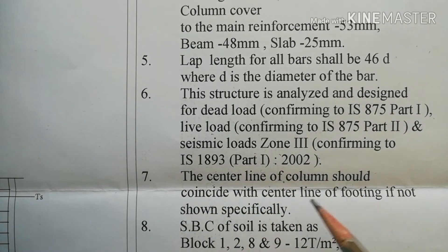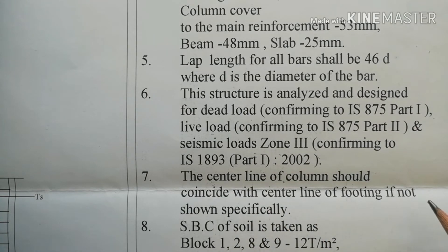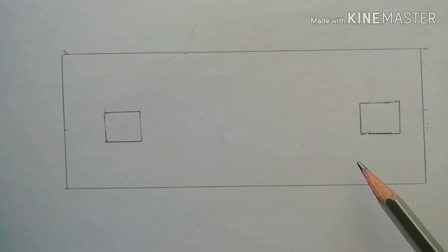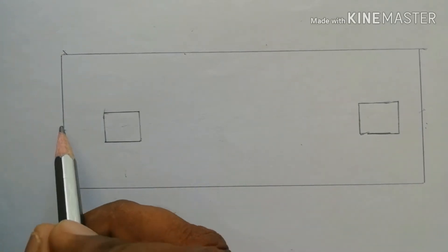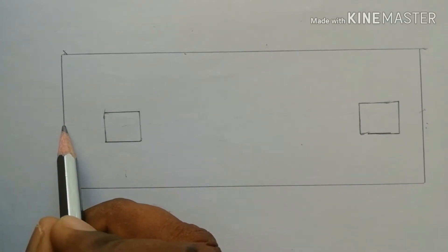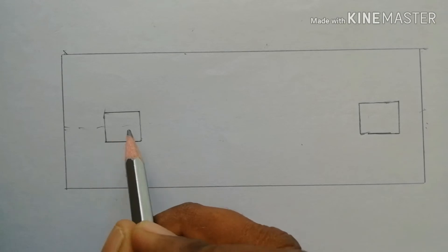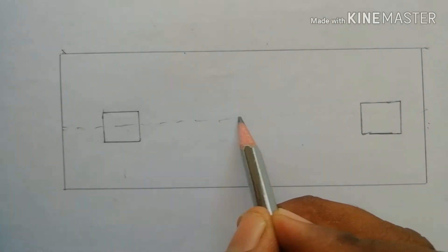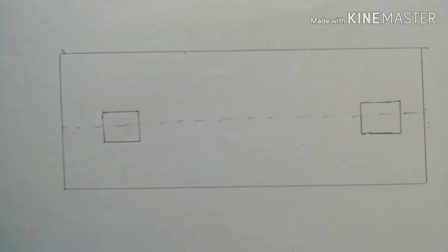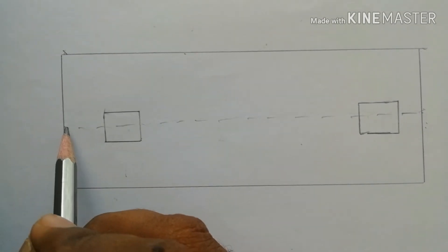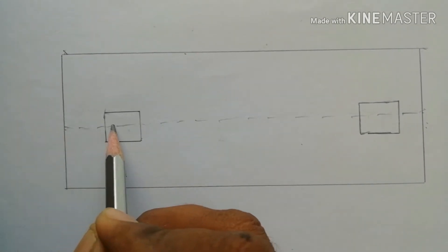The seventh point: the center line of the column should coincide with the center line of the footing, if not shown specifically. For a combined footing, the center line of the column aligns with the center line of the footing.